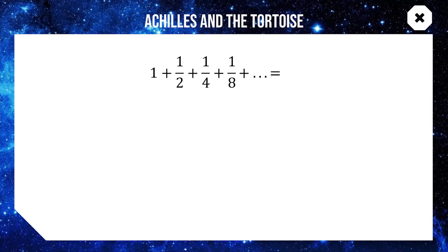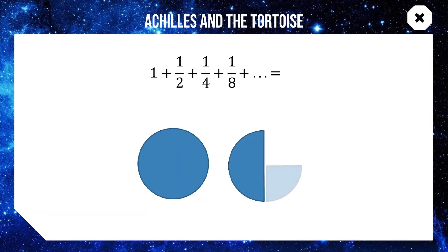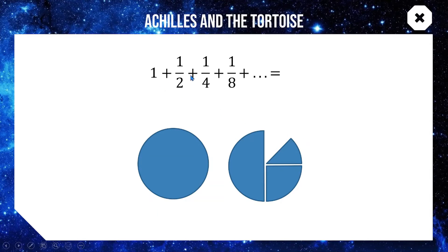Looking at a diagram: here is one, plus a half, plus a quarter, plus an eighth. Each time we add something there is still a little bit of the circle left, because we are only adding half of what remains. Each time the remaining gap halves, but there is always something missing. The total will never be more than two circles, so the limiting sum of this geometric series will never be greater than two.